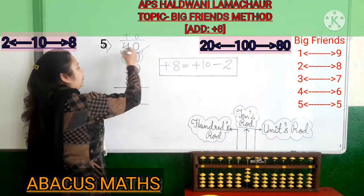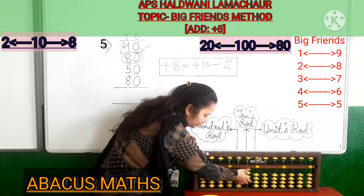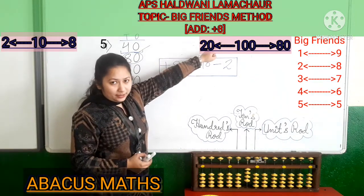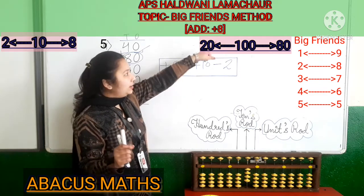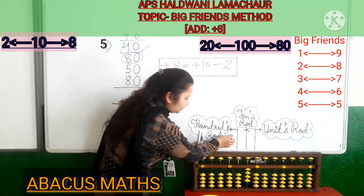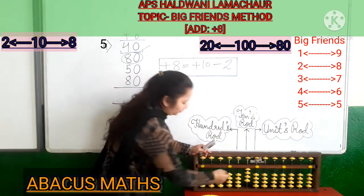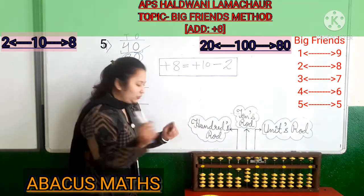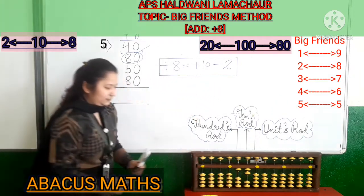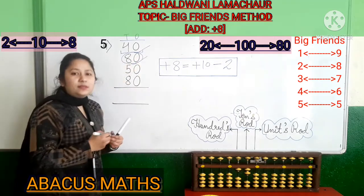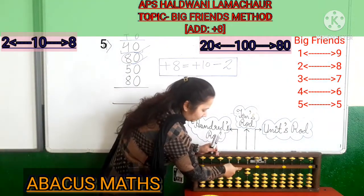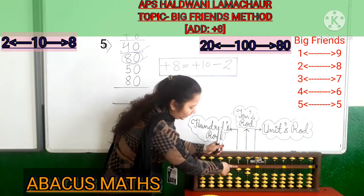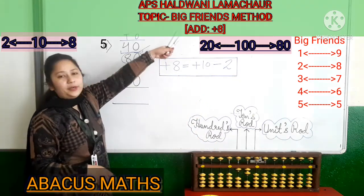Now add 80. You can see 40 is already added, but 80 is not there. For adding 80, the first number which we will add is 100. We will add 100 in the 100s rod. Who is the friend of 80? It is 20. So minus 20 from the 10s rod: minus 10, minus 10. Your 80 is added. We added 100 in the 100s rod and subtracted 20 from the 10s rod.